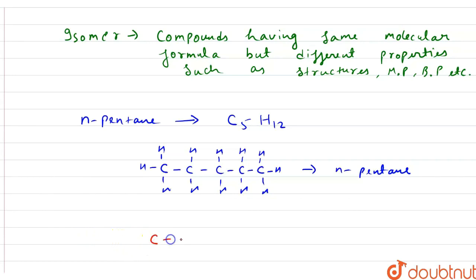So we will draw a 4 chain carbon and the 5th carbon will be on the 2nd position and remaining valency will be satisfied by hydrogen. That is 3 hydrogen here, 2 on the 2nd, 1 on the 3rd, and at last there will be 3 hydrogen.